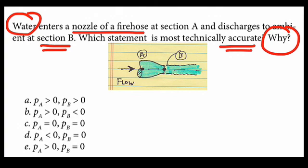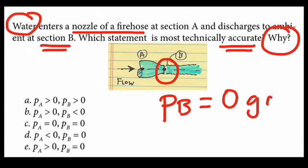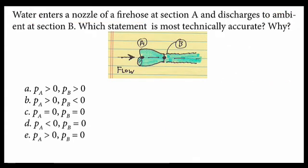When we see fluid discharging to ambient there, we know the pressure there will be zero gauge. So we want to look for an answer that has a pressure of zero there, and it's most common to use gauge pressure. And secondly,